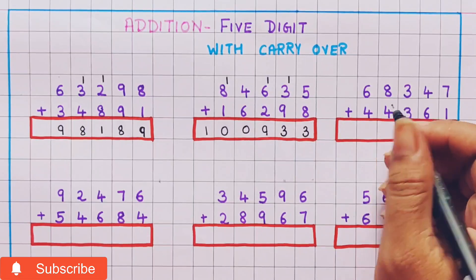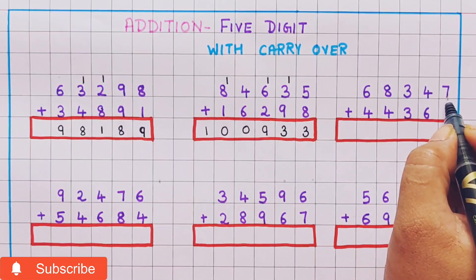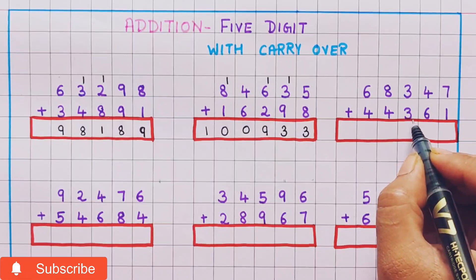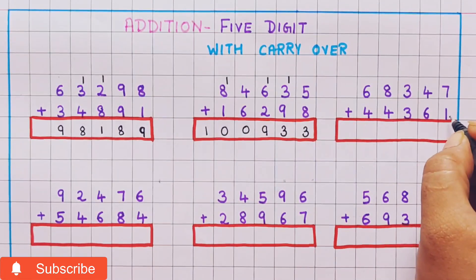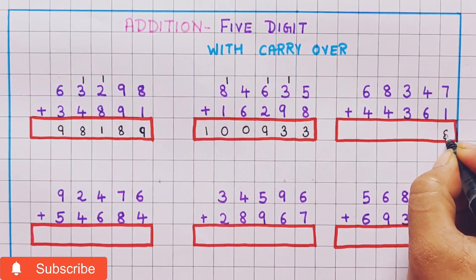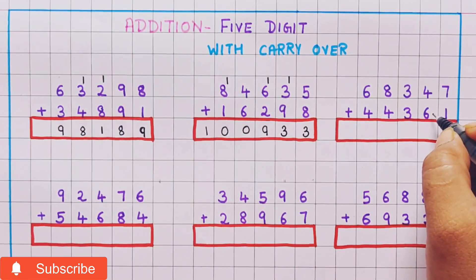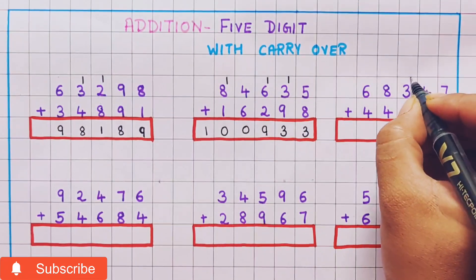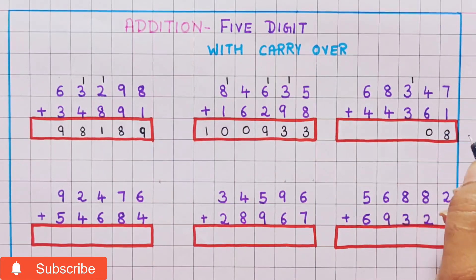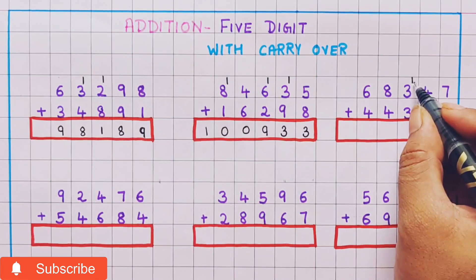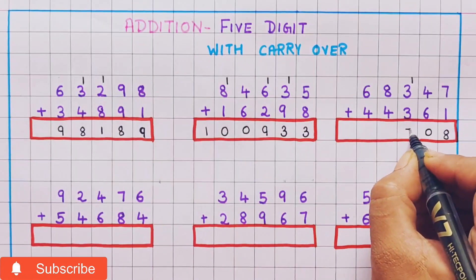Now let's do the next one: 68,347 plus 44,361. So 7 plus 1 is 8. Now 4 plus 6 is 10, so here I will put the carryover 1 and 0. Now 3 plus 1 is 4, and 4 plus 3 is 7, so I will write 7.